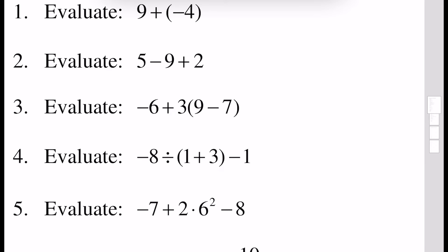In this video tutorial we will solve pre-algebra test examples that you can face in the United States educational system. Let's begin with evaluation of the expression 9 plus (-4) in brackets. Here we have to note that this plus with minus 4 inside brackets will give us 9 minus 4, because plus times minus gives us minus, which is 5.